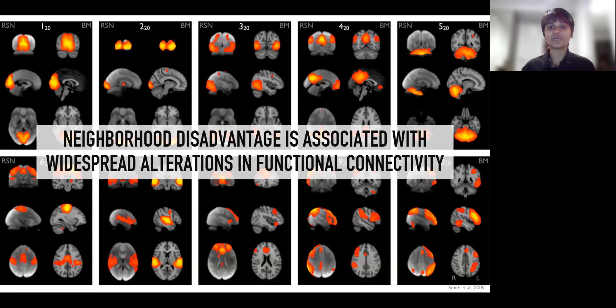And now onto what we found. We found that children who grew up in disadvantaged neighbourhoods had widespread alterations in functional connectivity.